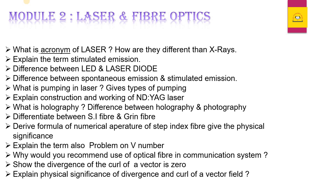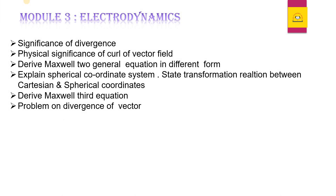Chapter 3 is a smaller chapter with comparatively less weightage. Important questions include: What is the significance of divergence? Derive Maxwell's two general equations in differential form. What is Maxwell's third equation — state and derive it. Problems can also be asked on the divergence of a vector.